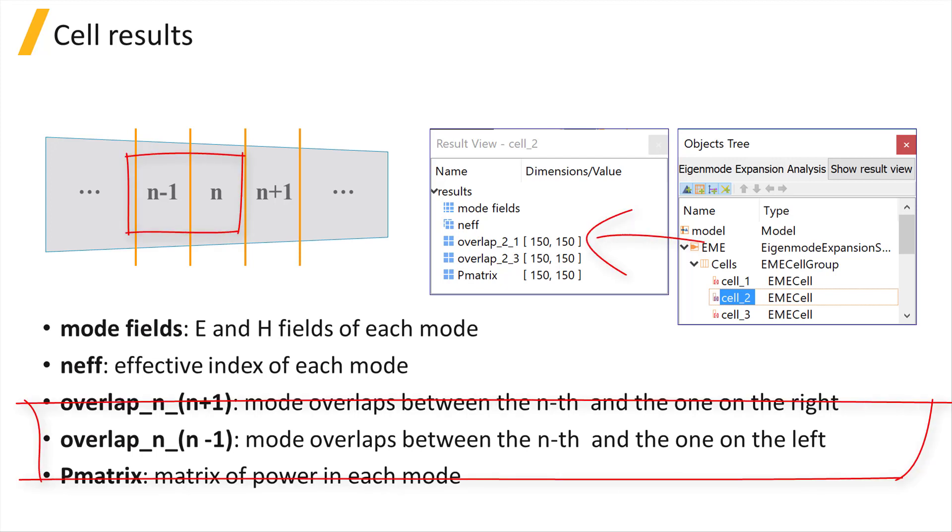Overlap_n_(n-1), which is the matrix of mode overlaps between the nth cell and the one on the left.